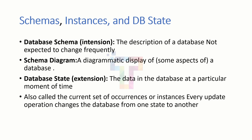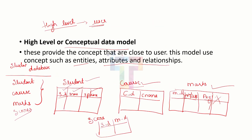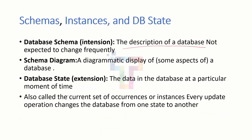Next we have schemas, instances, and database state. What is a database schema — also called as intention? The description of a database is called as database schema. It is not expected to be changed frequently. For example, we have defined the schema of the student database with student ID, student name, and student phone number — we are defining the description of a table. So it should not be changed again and again. That is database schema. In the next class I will show some examples. How the schema looks like — the schema diagram.